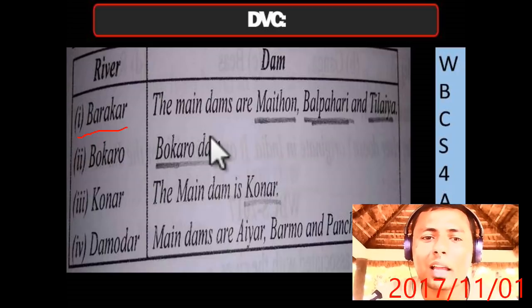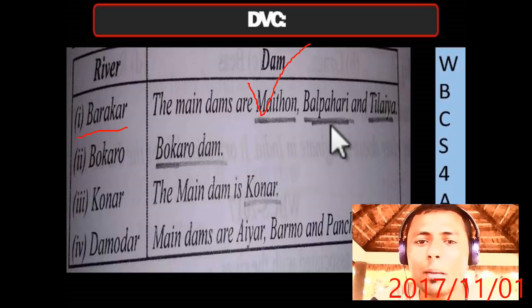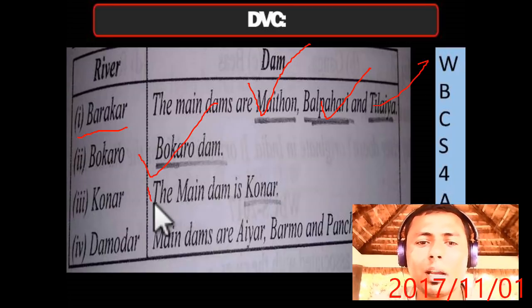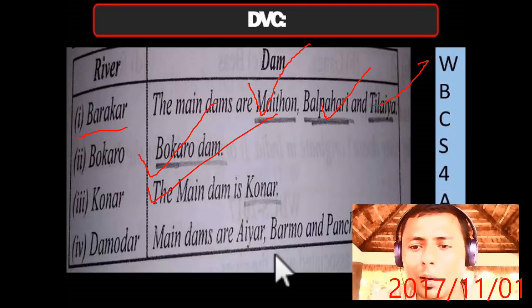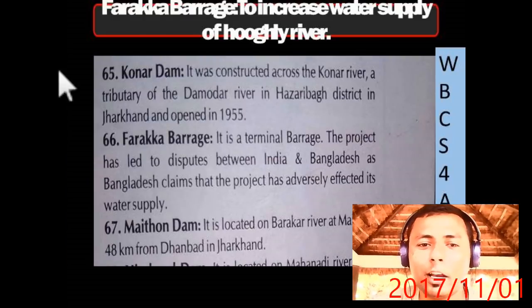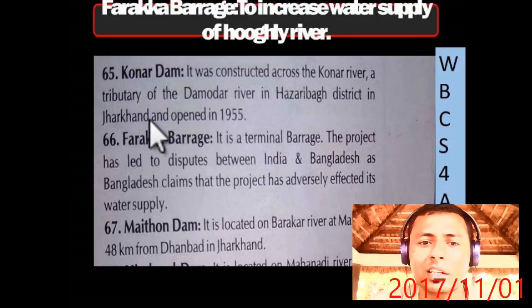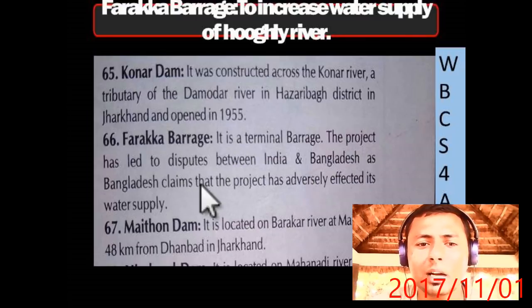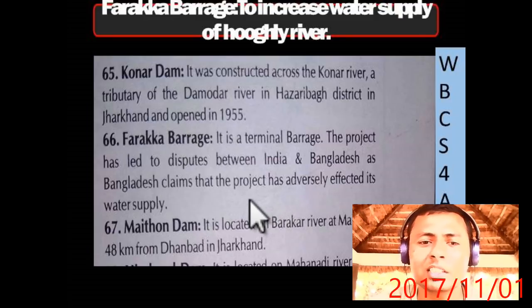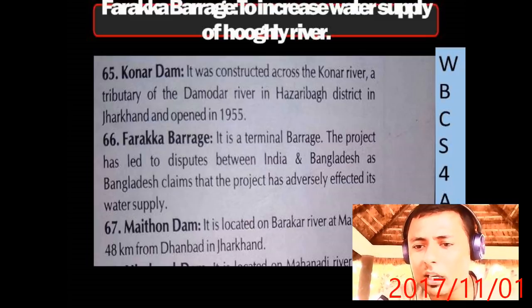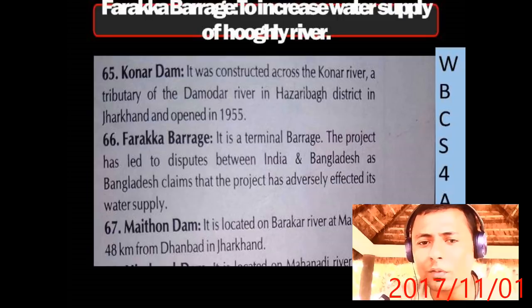Important dams on Damodar: Maithan Dam in Jharkhand, Balpahari and Tilaiya in Jharkhand, Bokaro Dam on the Bokaro River, Konar Dam, and on the Damodar the main dams are Barmo and Panchet. Konar Dam was constructed across the Konar River, a tributary of Damodar, in Hazaribag, Jharkhand, opened in 1955. The Farakka Barrage is a terminal barrage — its project has led to dispute between India and Bangladesh over water supply.